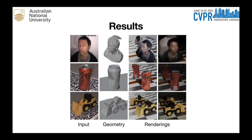We show real-world results captured by an iPhone. Each object is recovered from 50 to 100 images without a foreground segmentation mask. We are able to get high quality results consistent with the results on our synthetic dataset.